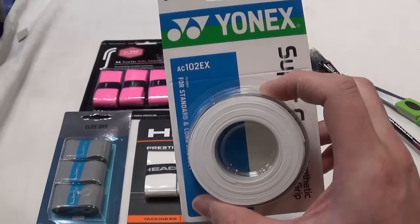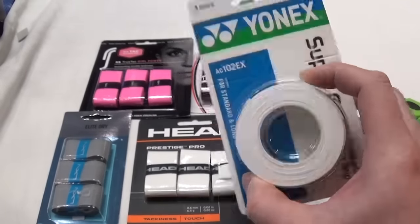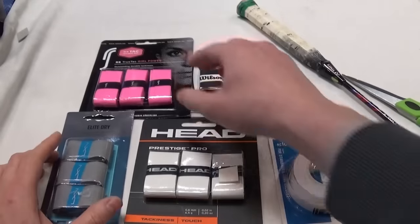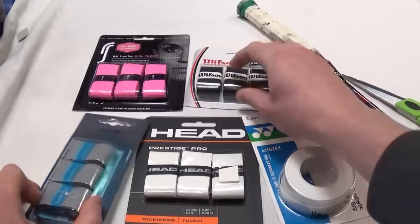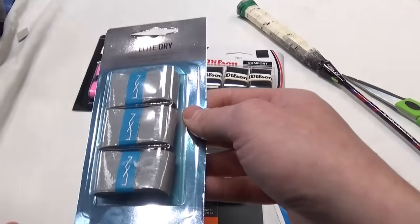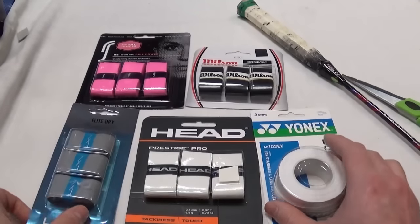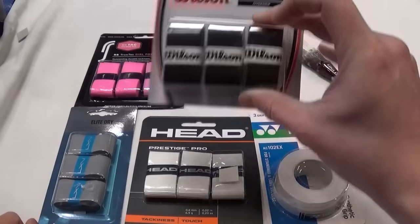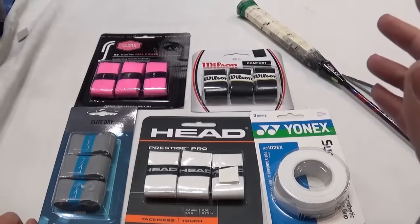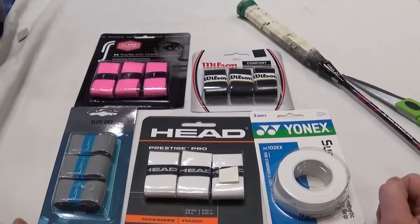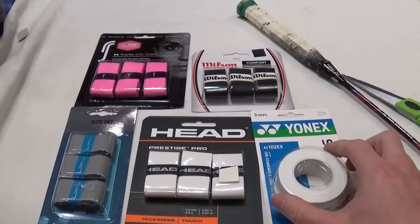They come in all sorts of different forms. The Yonex Supergrap comes in a pack of 3 on a roll. They come in different colours, different surfaces like the Elite Dry that has a very soft surface. The Wilson Pro Comfort has a very tacky one. So take a bit of time, get a few different ones, try different ones and see what you like.